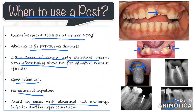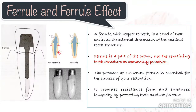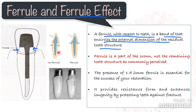When should you avoid it? When there is abnormal root anatomy like sharp curvatures or dilacerations, infections, or improper obturation. Now, very briefly, a ferrule with respect to teeth is a band that encircles the external dimension of the residual tooth structure. It is a part of the crown, not the remaining tooth structure as commonly perceived. Ferrule is extremely important as it provides resistance form and enhances longevity by protecting teeth against fracture. The presence of 1.5-2 mm ferrule is essential for the success of your restoration. More about ferrule and ferrule effect will be covered in another part.